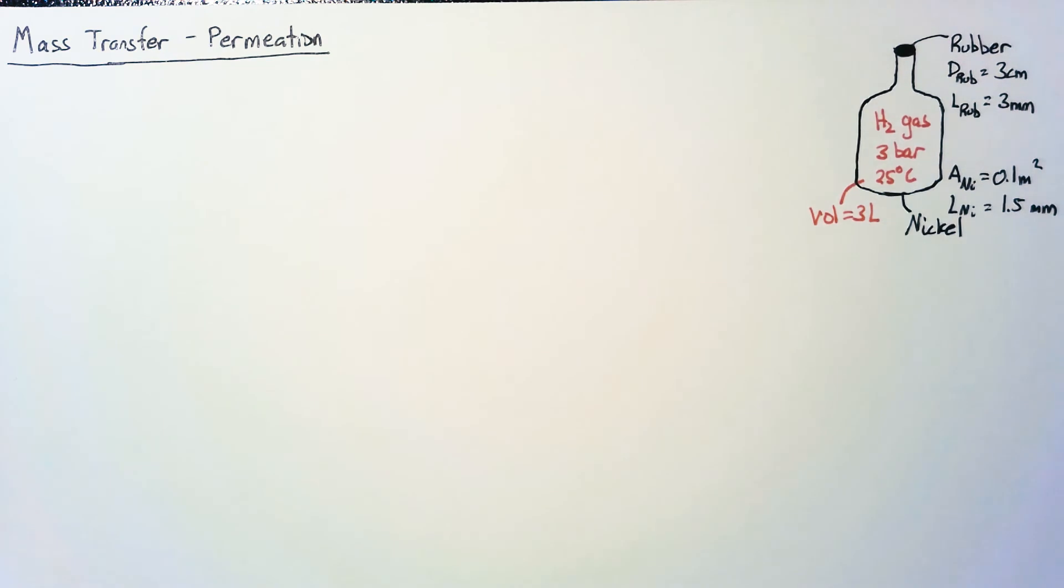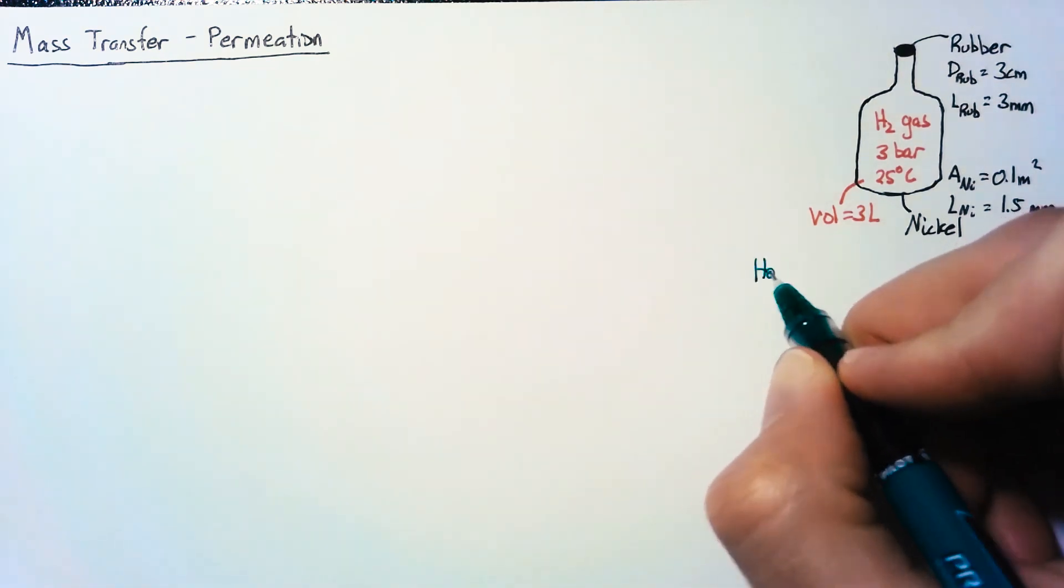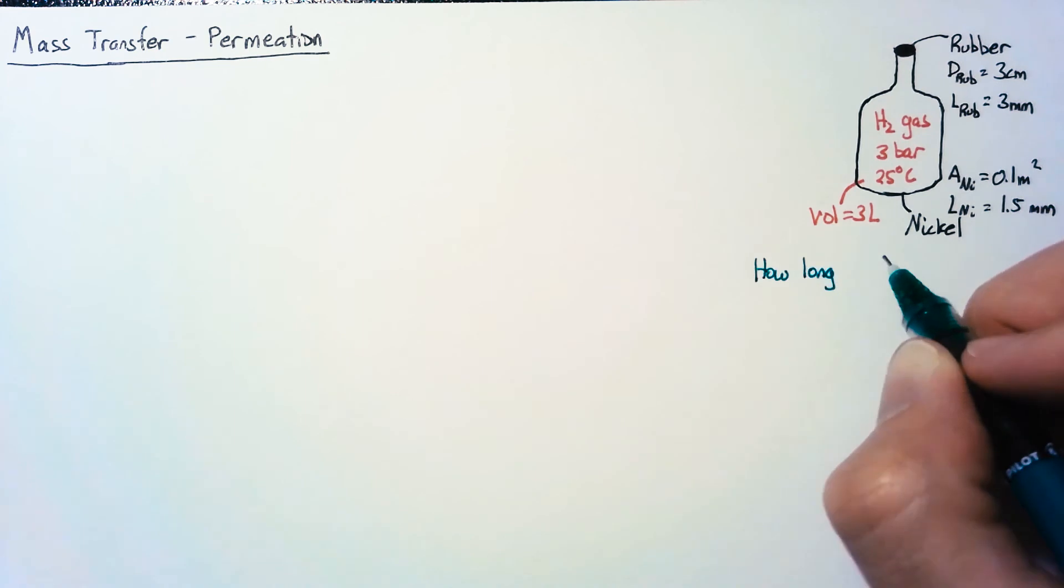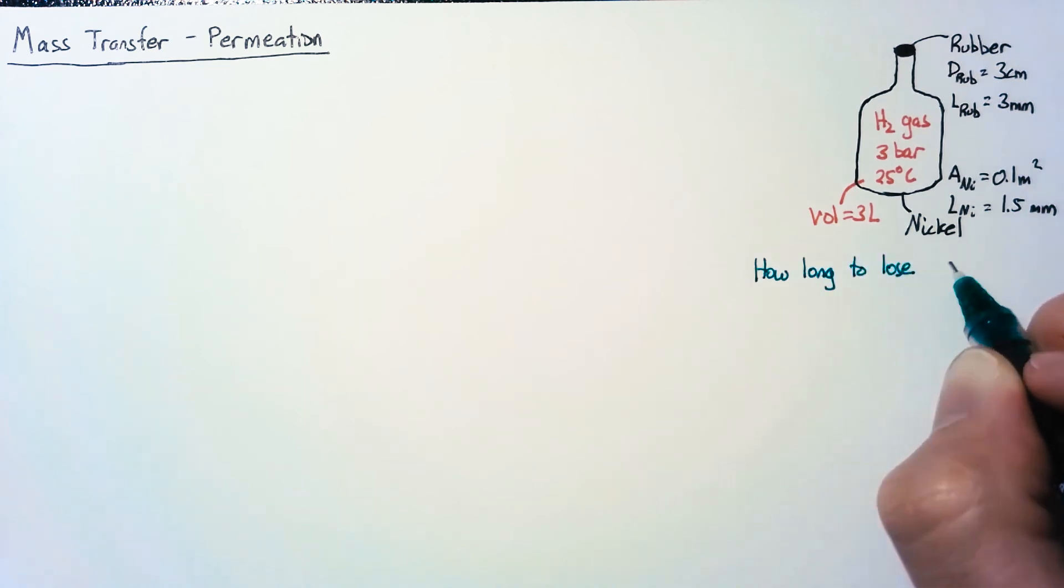On to the question that permeation can answer for us: How long will it take to lose 1% of the hydrogen in our flask?